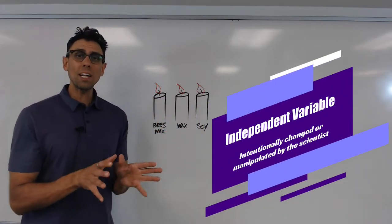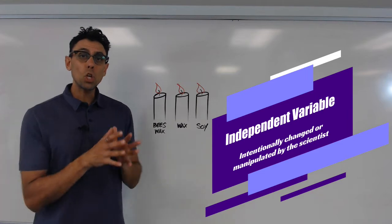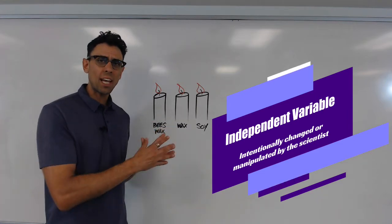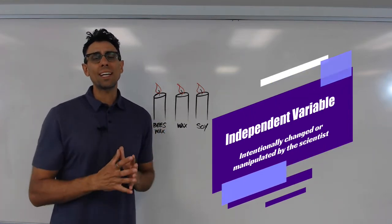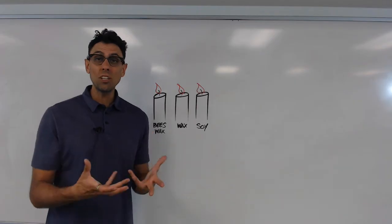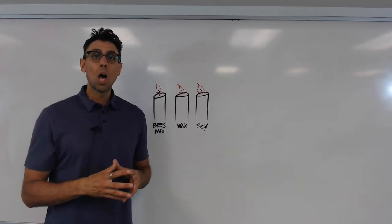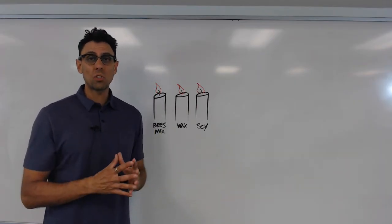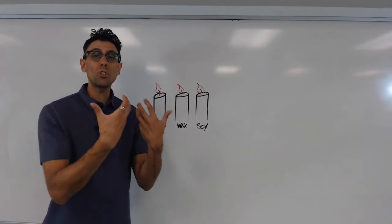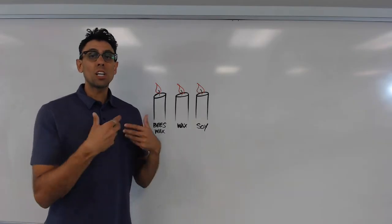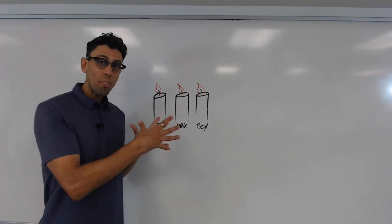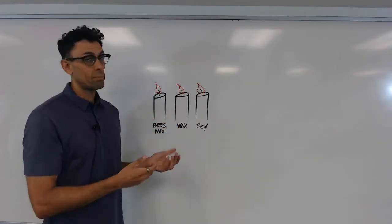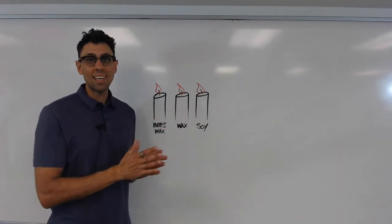Because I've decided to change it, I have intentionally manipulated it before the experiment even starts. It's part of my plan to make sure the type of candle is changed — that makes it the independent variable. The independent variable is always the thing that's changing according to the scientist's intention: what they want to change and the way they're setting up the experiment such that that one thing is different among the candles.